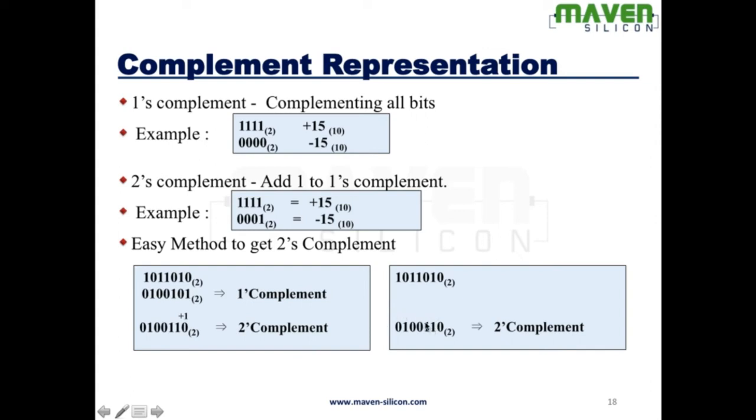So you have to start from LSB. Write the values as it is. Write the values 1 by 1. Once you hit 1, then for the remaining bits towards MSB, you have to complement all the bits. This is how straight away you can write the 2's complement. It's a shortcut.